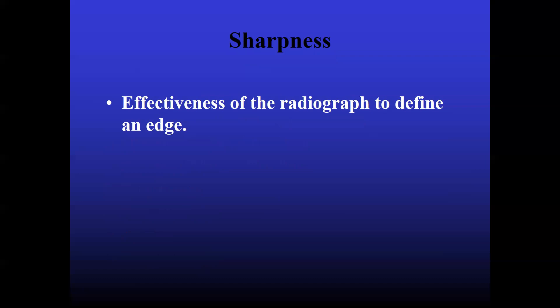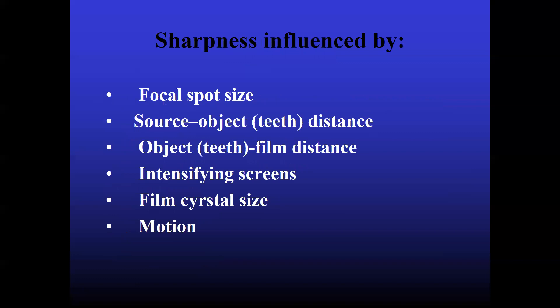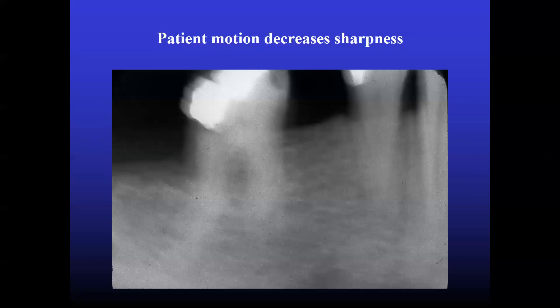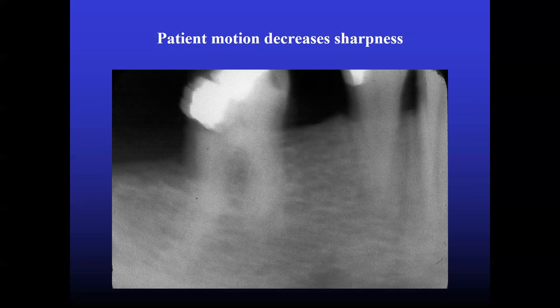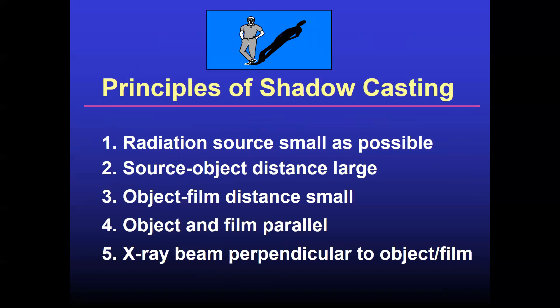So sharpness. Sharpness is the effectiveness of the radiograph to define an edge. Sharpness is influenced by focal spot size, source object distance, object film distance, intensifying screens, film crystal size, motion. Okay, this is a motion artifact. The patient has moved. So the sharpness has decreased significantly.